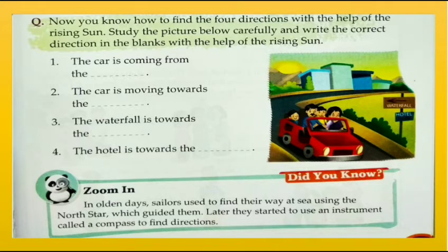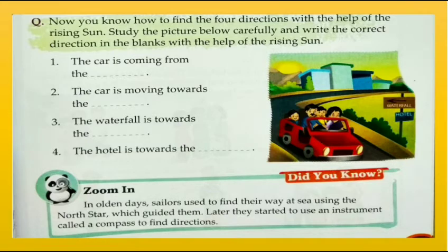Question three: the waterfall is towards the north — you can see the arrow on the signboard pointing to the waterfall in the left direction when you stand facing the sun, which means it is north. Question four: the hotel is towards the south, which is opposite to the north direction. Did you know — in olden days, sailors used to find their way at sea using the north star, which guided them. Later they started to use an instrument called a compass to find directions.